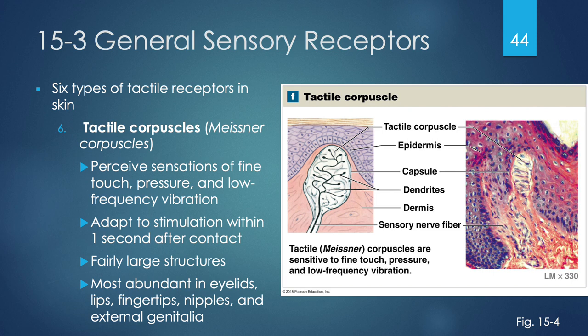Lastly, tactile corpuscles or Meissner corpuscles are very large structures visible in a light micrograph within the epidermis. A single sensory nerve fiber enters a capsule where multiple dendrites branch in all different directions in a highly interwoven arrangement, making them highly sensitive. They sense fine touch, pressure, and low-frequency vibration. They adapt to stimulation very quickly — even within one second of contact. These are found in our most finely sensitive areas: lips, fingertips, nipples, and external genitalia.